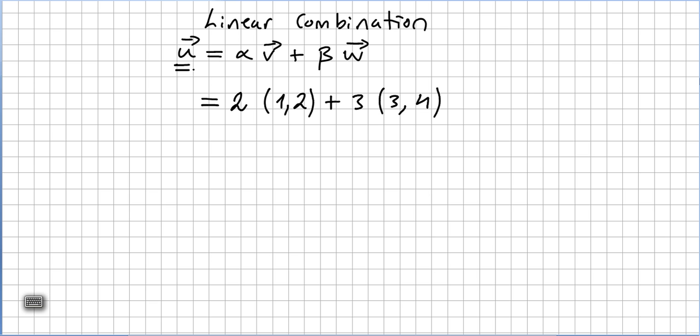We say that u is a linear combination. So we have a vector u, a vector v, a vector w. They are all in a given vector space. And we have alpha and beta scalars, in this case in the field of the reals. So alpha and beta are real numbers.